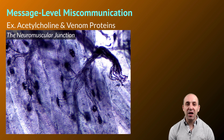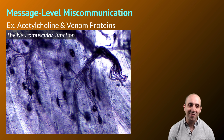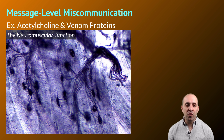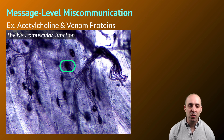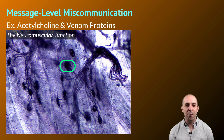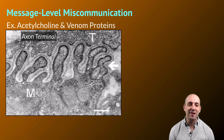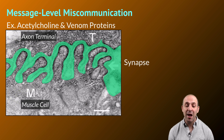Moving into message-level miscommunication, we're going to stay in the nervous system and look at the effect of different venom proteins on nervous system functioning, particularly in respect to our muscles. The connection between our nervous system and our muscles is a special kind of synapse known as the neuromuscular junction. This micrograph shows several neuromuscular junctions, with nerve cells as purple bundles and muscles underneath. It's a specialized synaptic space connecting the axon terminal of a motor neuron to a particular muscle cell.